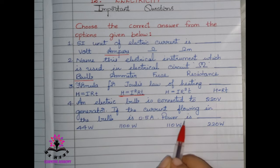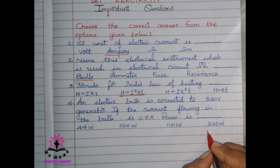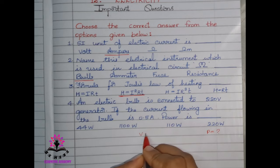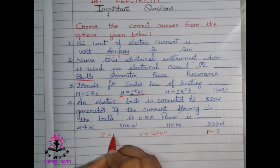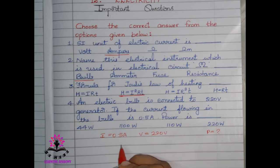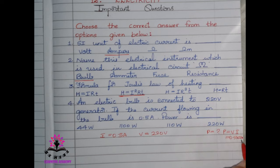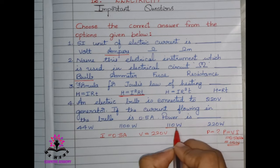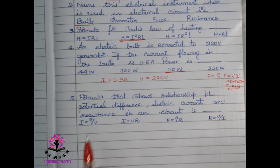Next question: an electric bulb is connected to a 220 volt generator. If the current flowing is 0.5 ampere, power is dash. Voltage is 220 volts and current is 0.5 ampere. The formula is power = voltage × current = 0.5 × 220, which is half of 220. The answer is 110 watts.